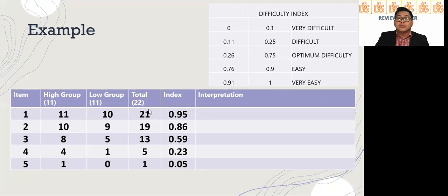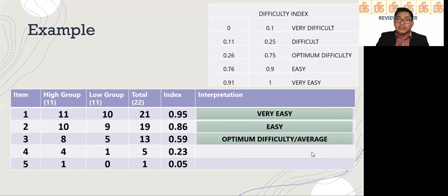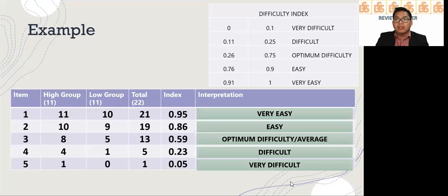For item number 2, these are the scores and the index are 0.86, 0.56, 0.23, 0.05. Same formula. Total number of correct answers divided by the total number of scores. What is your interpretation? For item number 1, 0.95 is between 0.91 and 1. That means that item is very easy. Item number 2, 0.86 is between 0.76 and 0.9, so it is easy. 0.59 is between 0.56 and 0.75, then it is optimal difficulty or average. 0.23 is between 0.11 up to 0.25 and that is difficult. While 0.05 is between 0 to 0.1, that is very difficult.